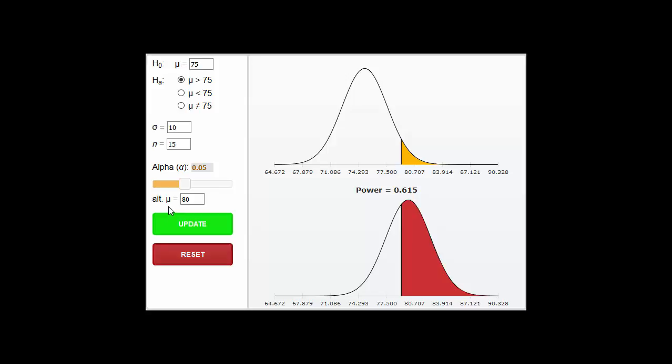So if mu is 80, what's the chance that we would have made the correct decision? Now we have a distribution where the mean is 80, and we have the same cutoff. Reject H0 is to the right of this line here. So what's this probability over here? That would be the statistical power. It turns out that computes to be about 0.615 here.